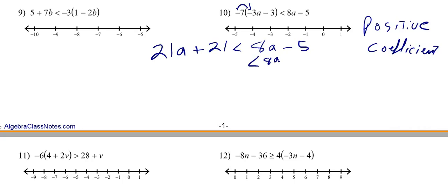So I'm going to subtract 8a. And these brackets just mean subtract. So 21 minus 8, that's 13. So 13a plus 21 is less than negative 5. So now we're going to subtract 21.